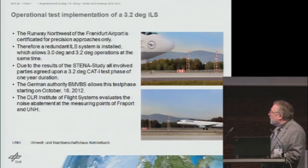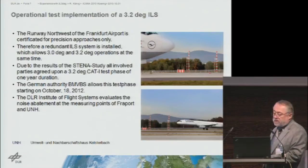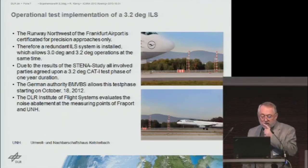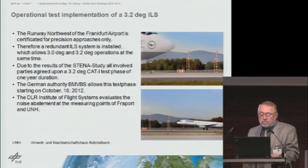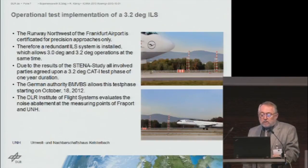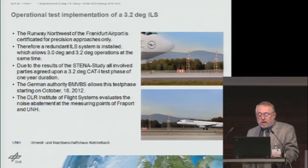How did we introduce this 3.2-degree approach in Frankfurt? The Northwest runway is only certified for precision approaches. Therefore, we have a redundant ILS system installed, which makes 3.2 and 3.0 degrees possible simultaneously. Due to the results of the CHINA study — a safety and operations study — all stakeholders agreed to do a CAT-1 test phase of one year involving the 3.2 degrees. The Federal Ministry of Traffic authorized this test phase, which restarted on the 18th of October 2012.